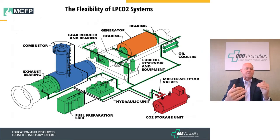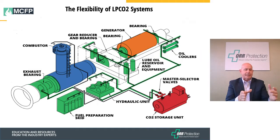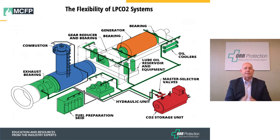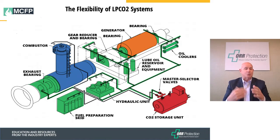A conventional or high pressure CO2 system may only be able to discharge CO2 into one zone or hazard, and after that single discharge you would have to recharge the high pressure bottles individually. The benefit of a low pressure bulk system is that we can design it to have multiple shots or multiple zones of discharge — discharging once, and again if needed, in one area.